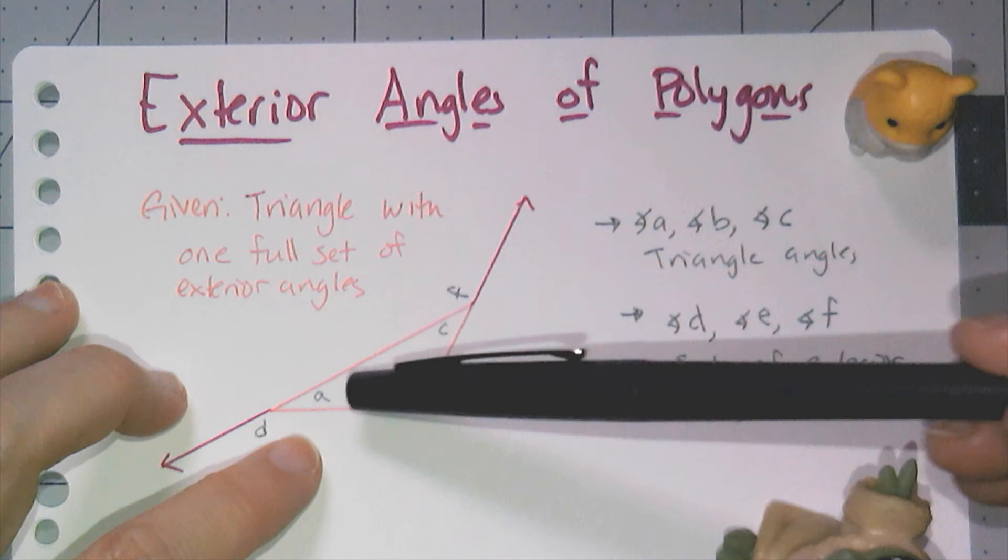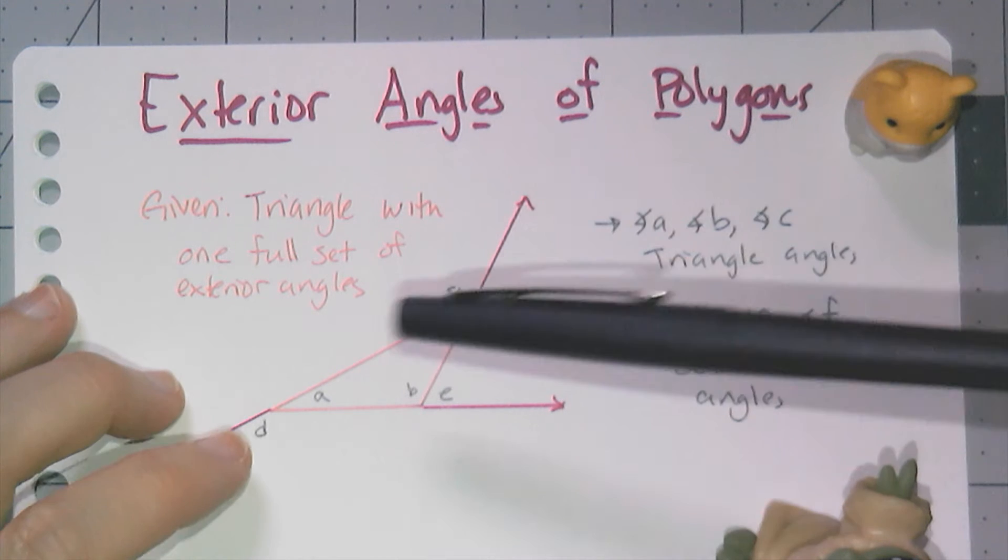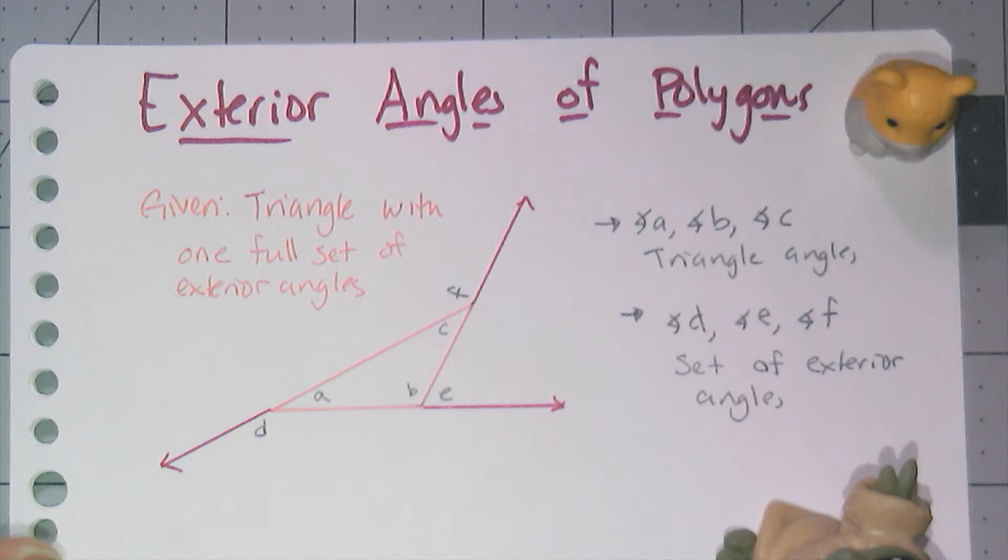What I have instead is just one exterior angle for each of the triangle's angles. And so angles A, B, and C are the actual interior angles of the triangle, and D, E, and F are their exterior angles.